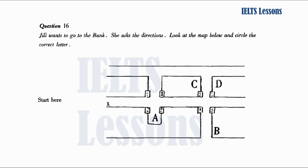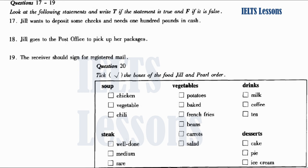Jill goes to the bank and the post office. As you listen, look at the statements and write T if the statement is true, and F if the statement is false. First, you will have some time to look at questions 17 to 19. Now listen carefully and answer questions 17 to 19. Jill is in the bank. I want to deposit these cheques, please. Don't forget to sign them on the back. You'll want to fill out a deposit slip. And I'll need £100 in cash. What bills do you want? Tens and twenties will be okay. And will you please tell me my bank balance?